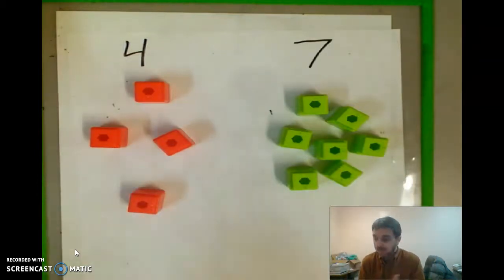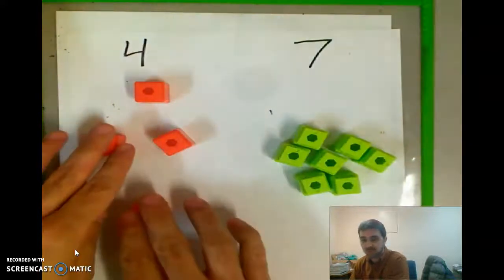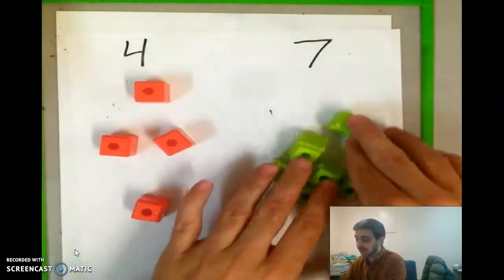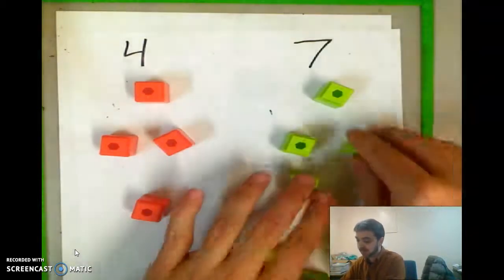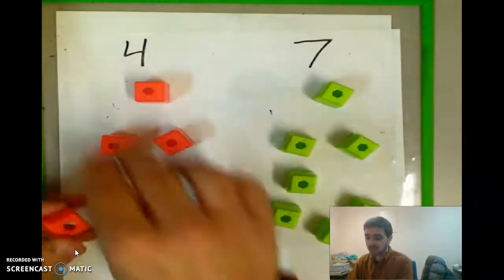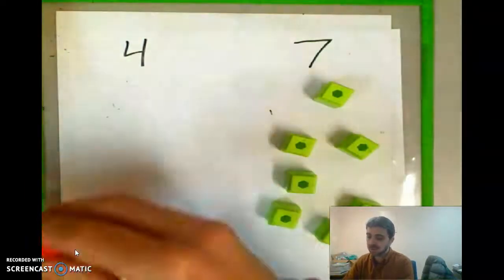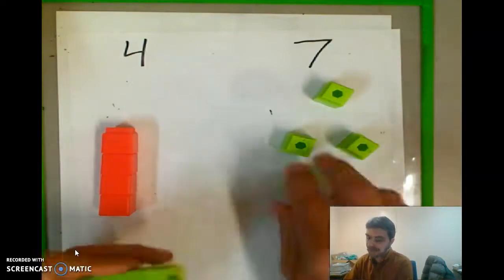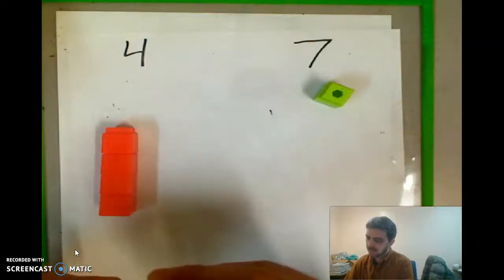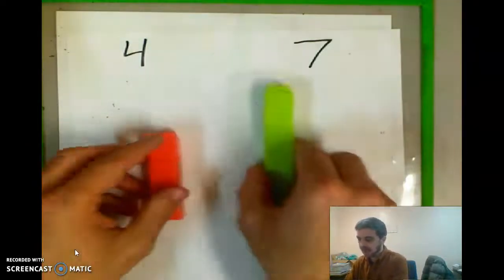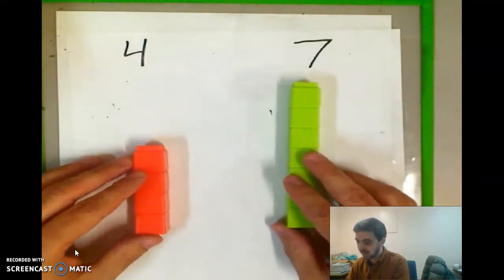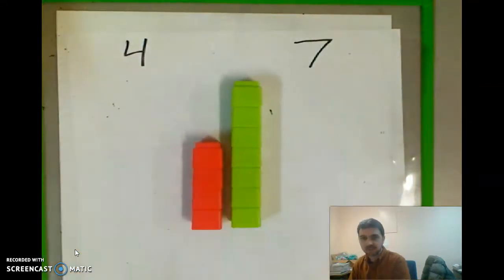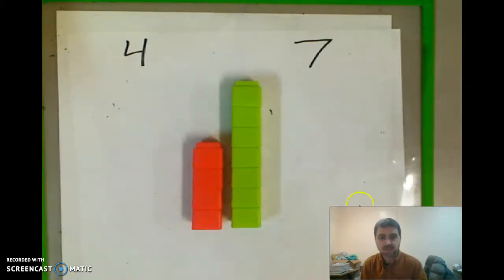I tried to trick you by putting these closer together and these more spread out, but really that doesn't make a difference because, look, I can spread these out too, right? Even more. The way to really check which one is more is to make a tower like this. And tomorrow you're going to do this. So for now, just watch me. But tomorrow I'm going to have you make some towers with your cubes. Now look, here's four, here's seven.